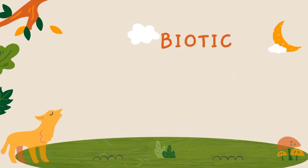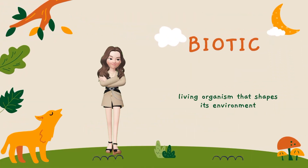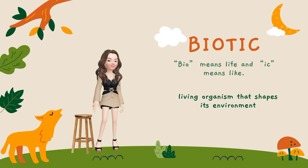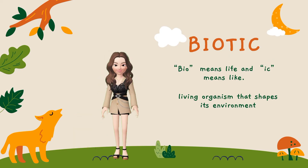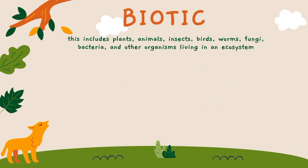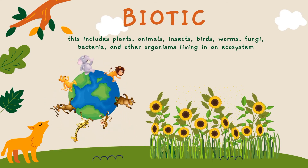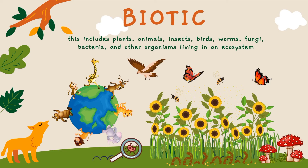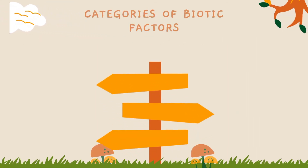Now let us proceed to biotic factors. Biotic factors refer to all living organisms found in the environment. The term biotic is formed from 'bio' meaning life and 'ic' meaning like — meaning lifelike. It includes plants, animals, insects, birds, worms, fungi, bacteria, and other organisms living in an ecosystem. Biotic factors affect each other and influence the health of the ecosystem. They are participants in the food web and rely on each other for survival. These factors are grouped into three distinct categories: producers, consumers, and decomposers.